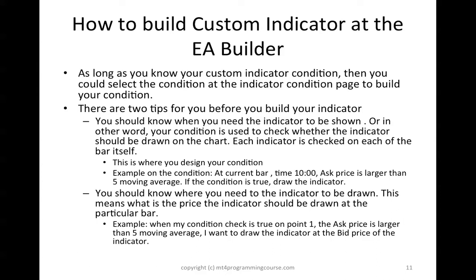Again, the indicator is just like a value or a condition where the line should be drawn, or the object like an arrow up or arrow down should be drawn. So for example, I will set the current bar, check on the current bar — at the time, maybe 10 o'clock — whether the ask price is larger than the 5-period moving average. So if this condition is met or is true, then I want to draw the indicator.